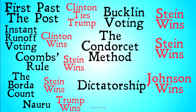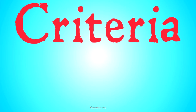The wild thing that we should look at here is that we have five different results — not from changing the votes, but from changing the method that we use to count them. Depending on the method, we can get all of these different candidates and a tie as possible victors. In our political example, we've gotten five different results depending on the system that we use, and every single candidate wins at least one voting method. That's wild.